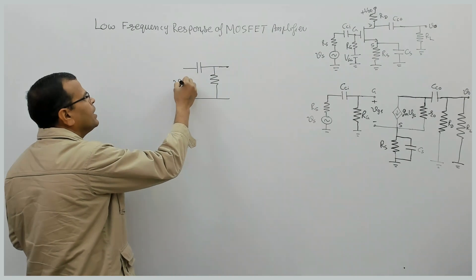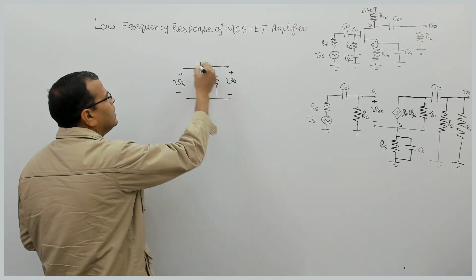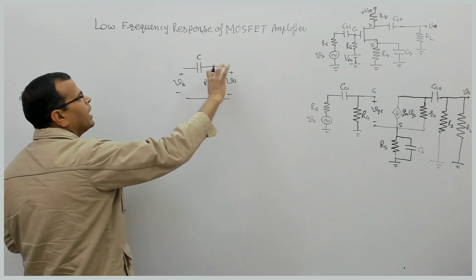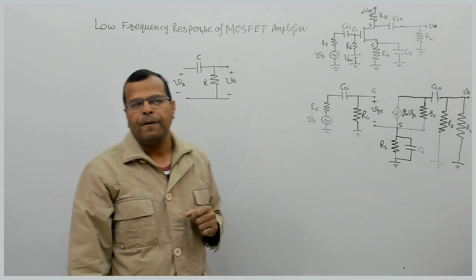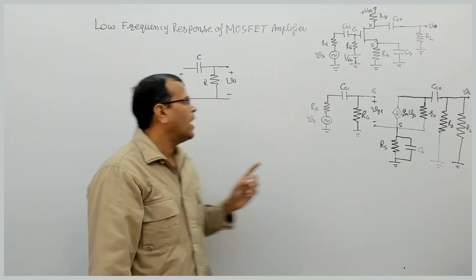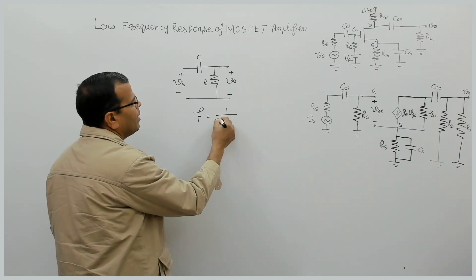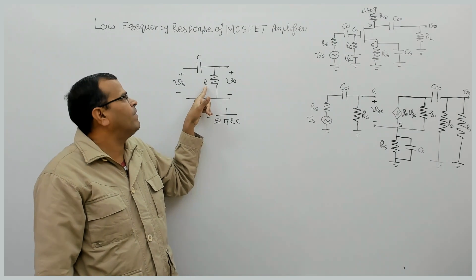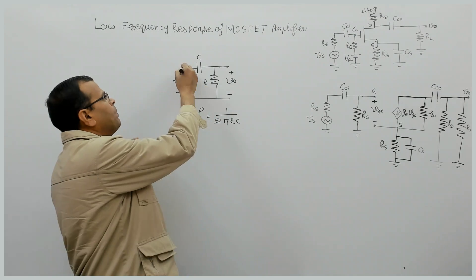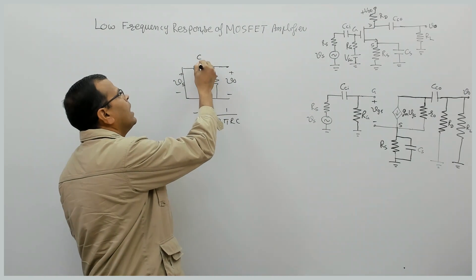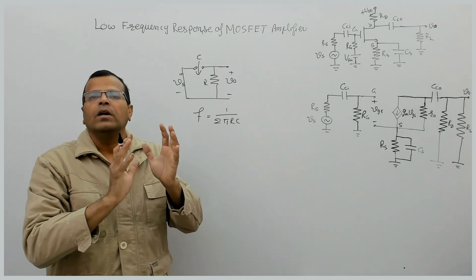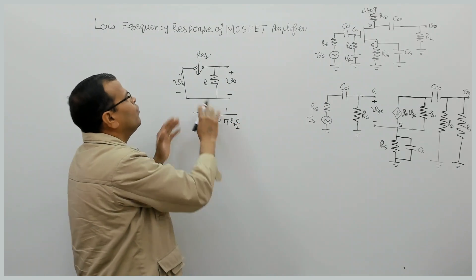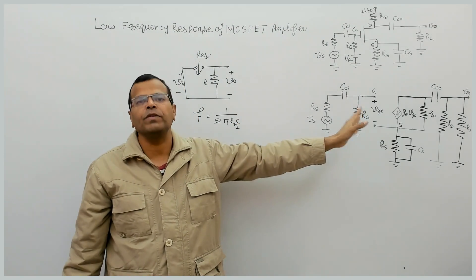In a high pass circuit, we have input here, output here, a capacitor in the series branch, and a resistance R — that is the high pass RC circuit where the capacitor is between the input side and output side. The cutoff frequency is given by 1/(2πRC). When there are multiple resistances, replace the input source by a short circuit, open the terminals of the capacitor, and find the resistance seen across those terminals — that is R equivalent.